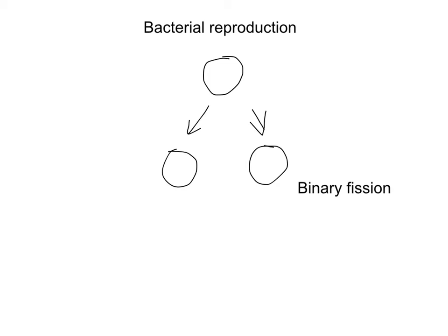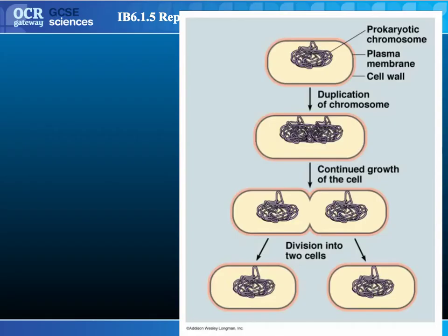This diagram shows binary fission in more detail. The bacteria contain a chromosome, and just like mitosis in our cells, the DNA must be duplicated before the cell splits. As the DNA is duplicated, the cell wall grows inwards to allow separation, producing two daughter cells that are genetically identical to the parent bacterial cell.